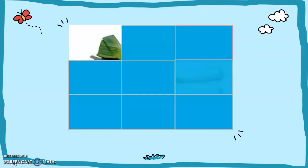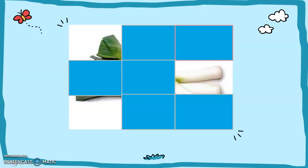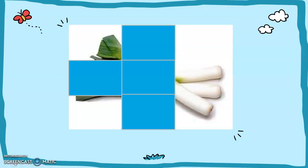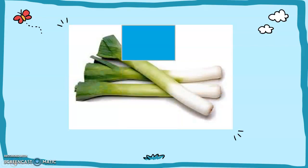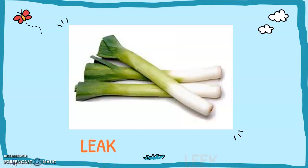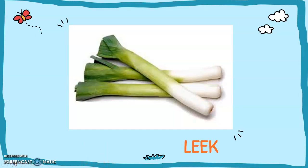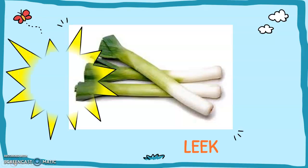Here's another. It's green, it's white — what is it? It's a leek. But is it a leaky tap or a leek vegetable? Which one is which spelling? The leek vegetable is L-E-E-K. If you have a leaky tap, it's L-E-A-K. Well done if you got that right. Fantastic.